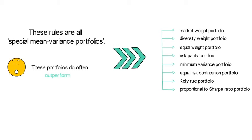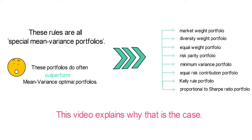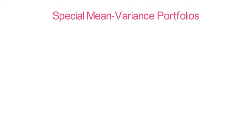And maybe surprisingly, these portfolios do often outperform mean variance optimal portfolios. This video explains why that is the case. So let's talk about these special mean variance portfolios and let me give you a quick and punchy definition of each of these portfolio rules. Often the name already suggests what they do.